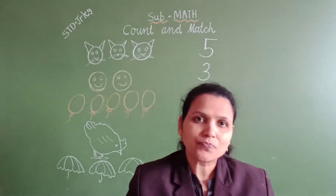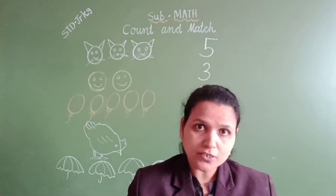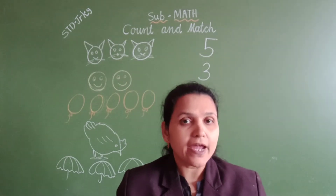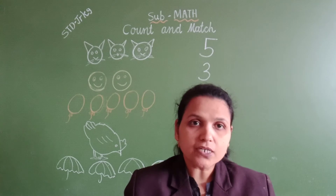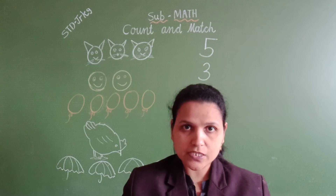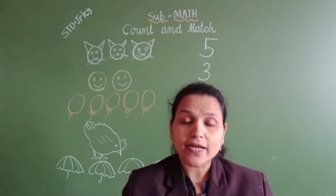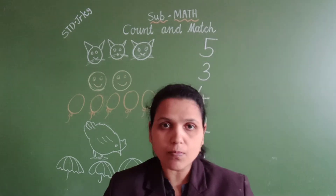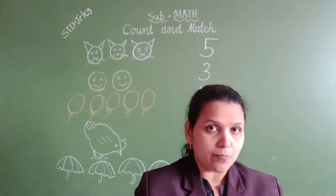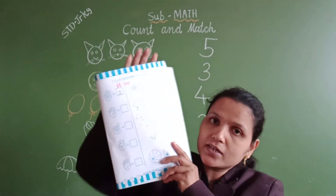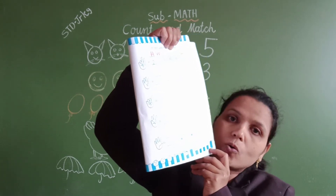Hello dear kids, welcome back. In the last video, we learned how to count the number and how to write in the box — count the numbers and write the correct numbers in the box. We learned that activity: count the numbers, count the objects, and write the correct number in the box. Do you remember that activity? I also gave you homework. Did you complete that homework? Very good.